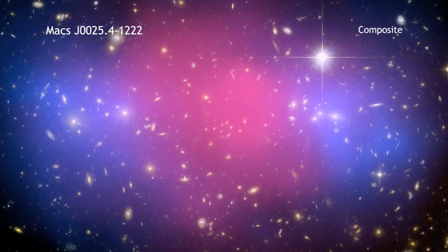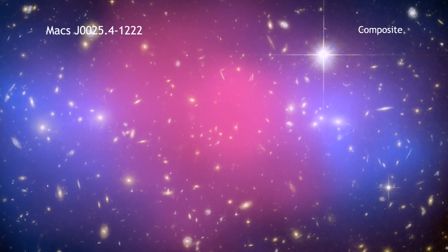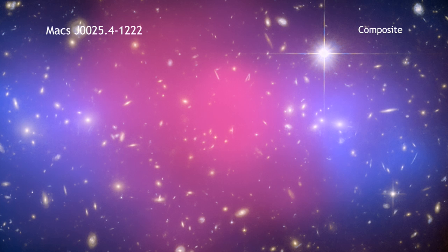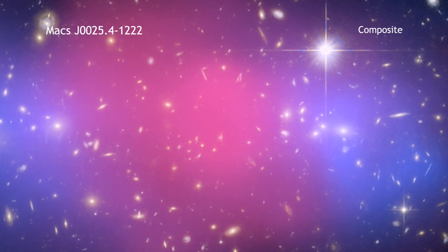Two galaxy clusters, each a quadrillion times the mass of the Sun, collided to form a system formerly known as MACS J0025.4-1222.